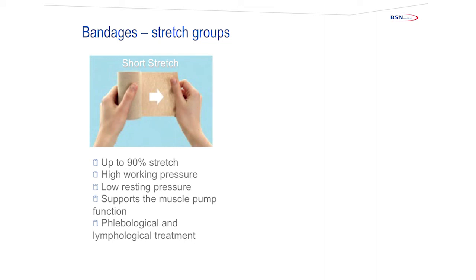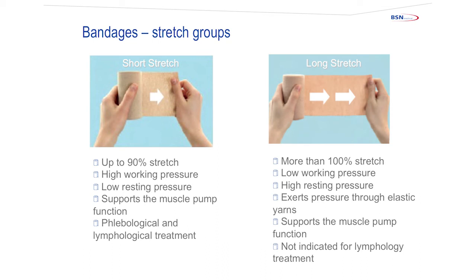Bandages are divided into two stretch groups: short stretch and long stretch. Short stretch can be stretched up to 90 percent; it has a high working pressure and a low resting pressure. It supports the muscle pump function and can be used for venous disease as well as lymphology treatment. Long stretch can be stretched more than 100 percent; it has a low working pressure and a high resting pressure. This exerts pressure through the elastic yarns of the garment, supports the muscle pump, but is not indicated for lymphology treatment.